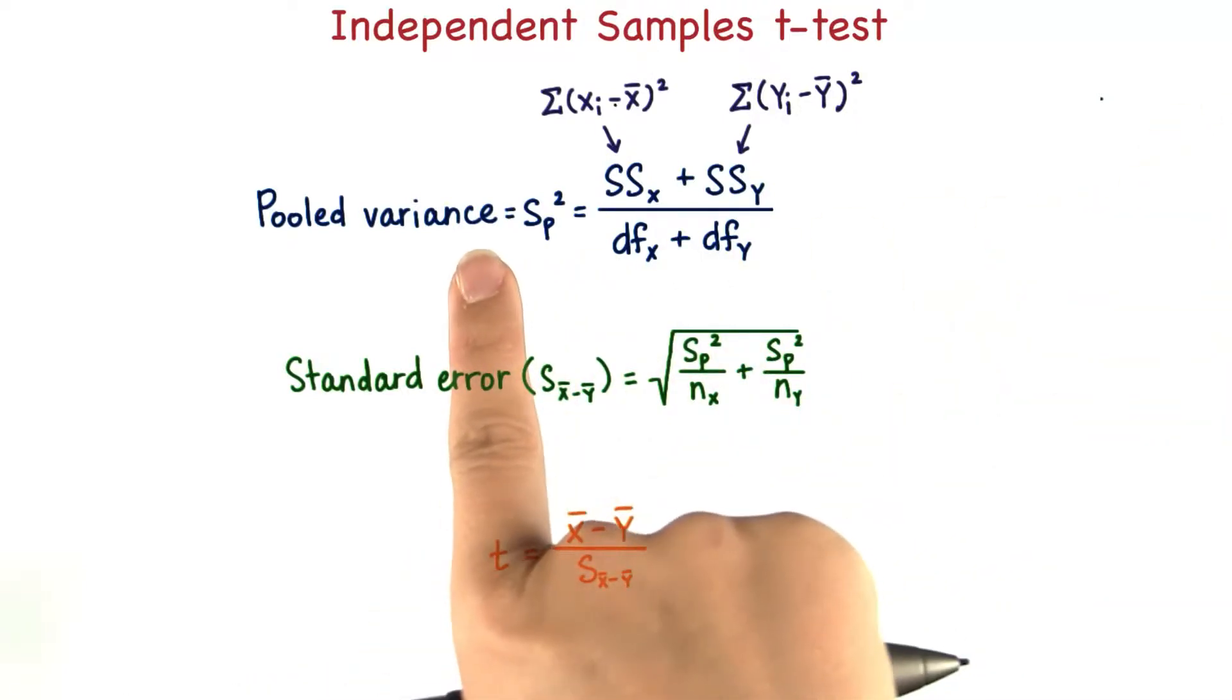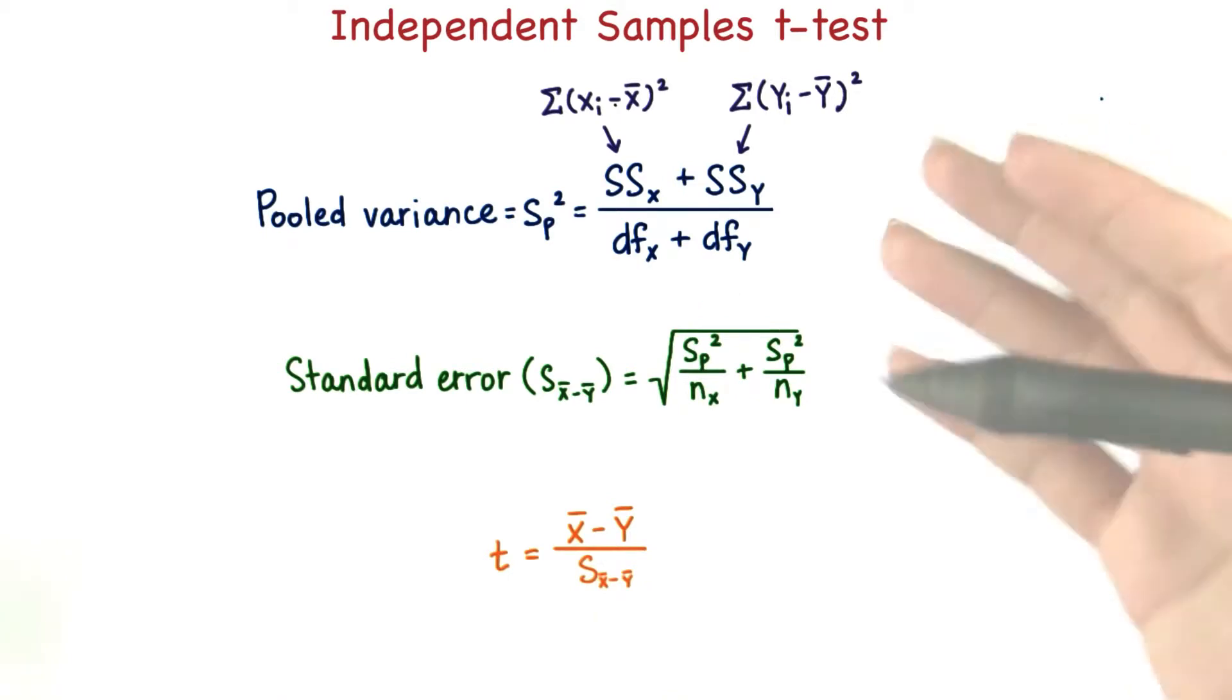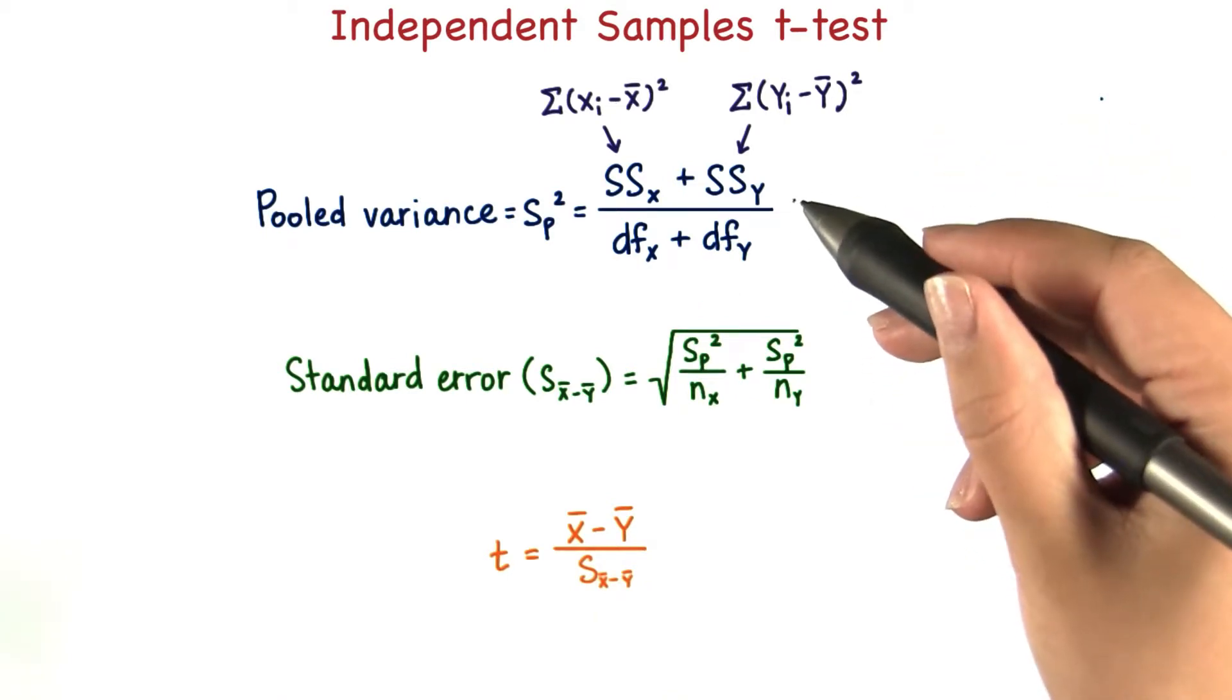In general, we want to use the pooled variance since it corrects for the different sample sizes. In the problem set, you'll get more practice using the pooled variance.